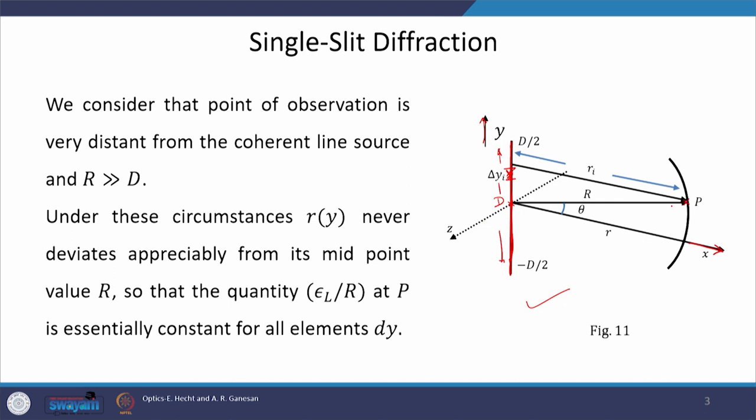The point of observation P is at a distance capital R from the origin, and from the length element y_i the distance to P is r_i. The derivation we did in the last class is a generalized derivation valid for both Fraunhofer and Fresnel, because for the small r term, which is a function of y, no approximation or restrictions have been imposed on it.